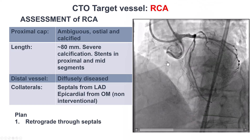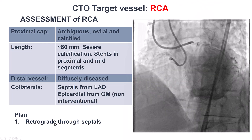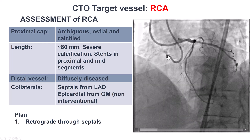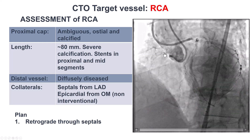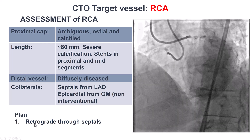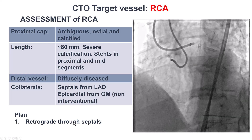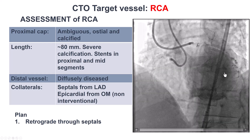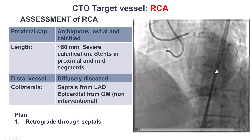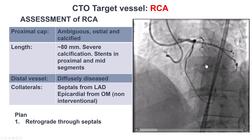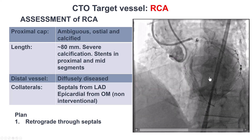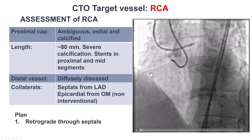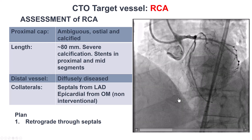Our plan was to go with the primary retrograde approach because we were unable to engage the CTO vessel. It was a flush aorto-osteal occlusion, in which case going retrograde is often the only way. We thought that the epicardial collaterals were highly complex — very small and tortuous vessels — so we did not think it was going to be a good idea to try to go retrograde through the epicardial. The occlusion had a long length and the distal vessel was diffusely diseased.